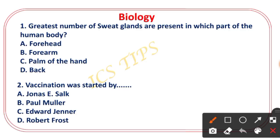The first question: the greatest number of sweat glands are present in which part of the human body? Option A is forehead, option B is forearm, option C is palm of the hand, option D is back. The right answer is option C — palm of the hand.